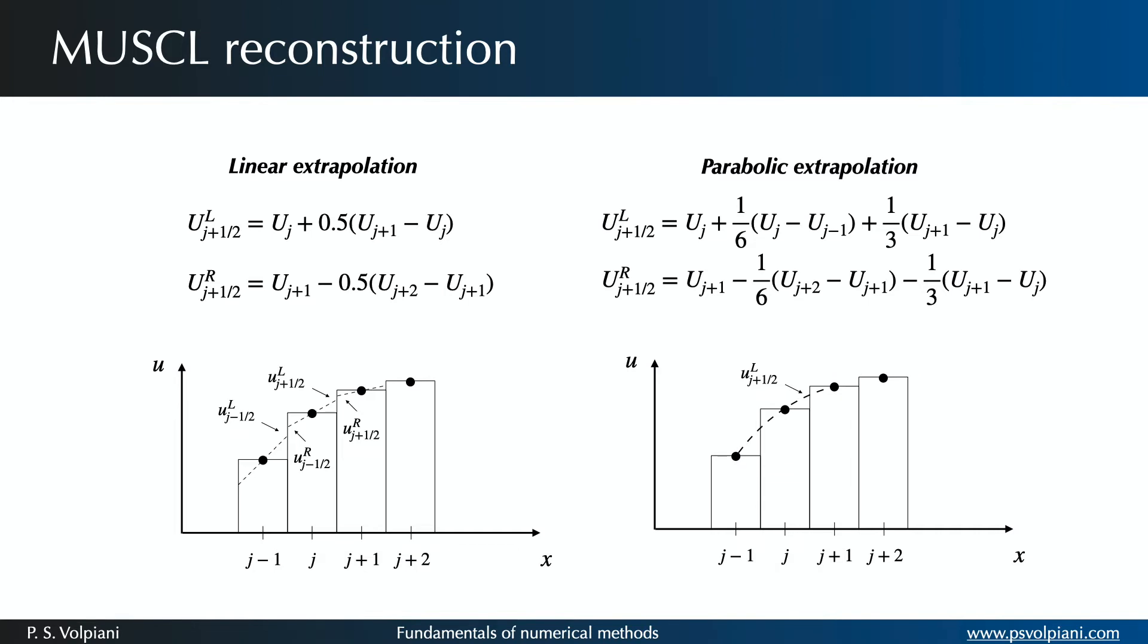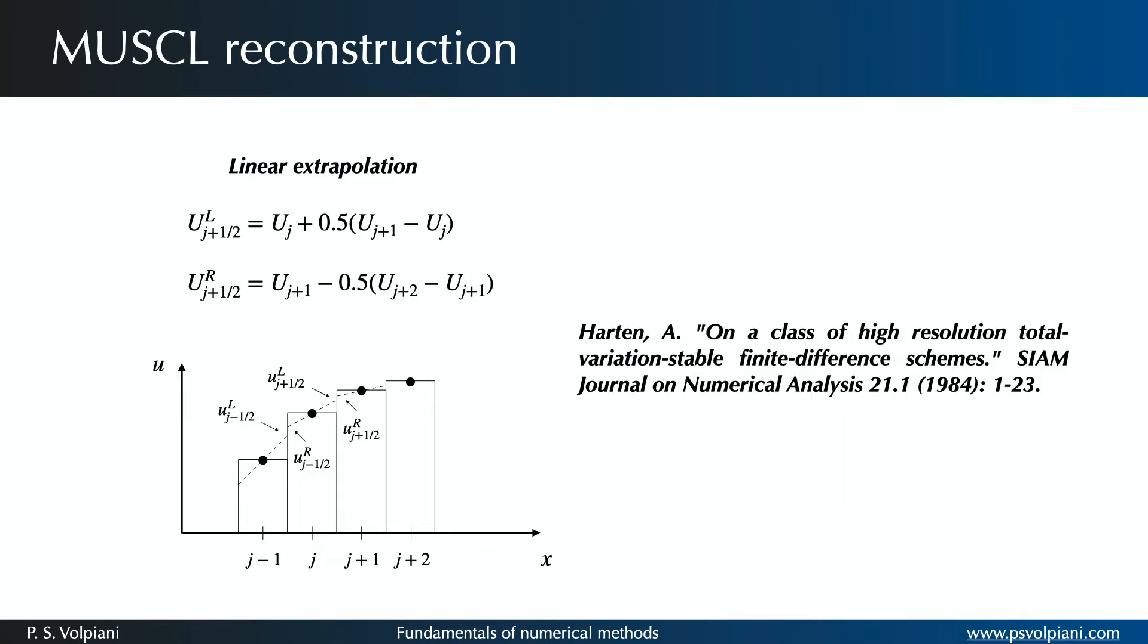The MUSCL reconstruction can introduce wiggles in the solution, close to discontinuities. Wiggles are up-down oscillations at the shortest wavelength representable on the grid. Rather than introducing an artificial and arbitrary viscosity to damp these oscillations, as in the case of center schemes, Harten introduced the concept of total variation diminishing scheme that prevents the appearance of such oscillations.